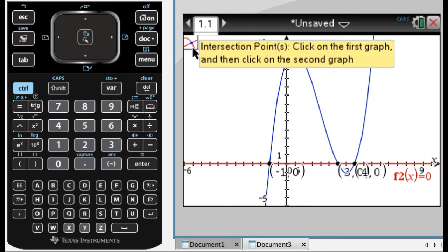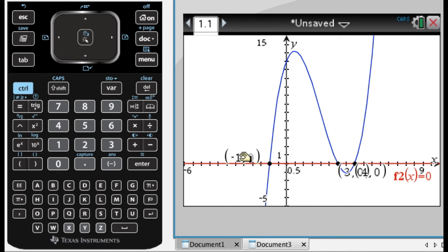So I'm going to escape so that this tool goes away. And then click and drag these so they're not really in my way anymore. And there are my x-intercepts.